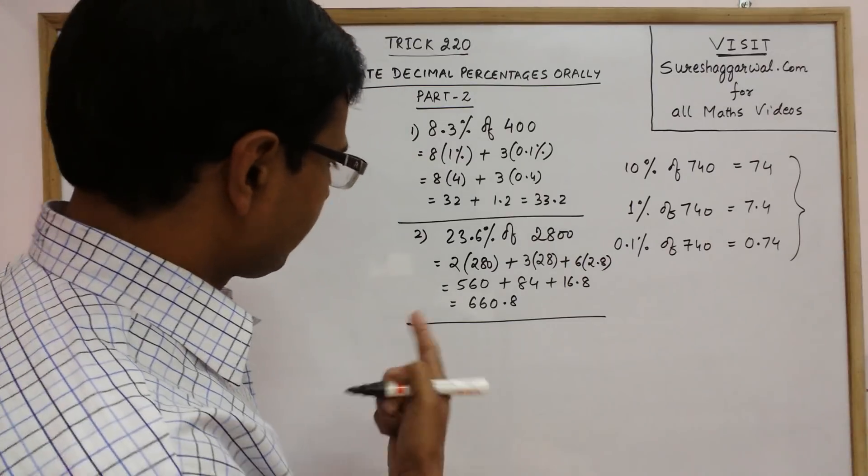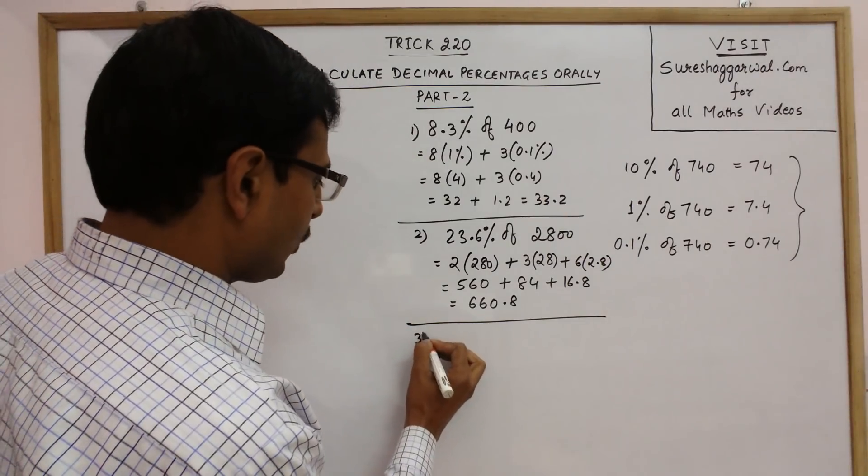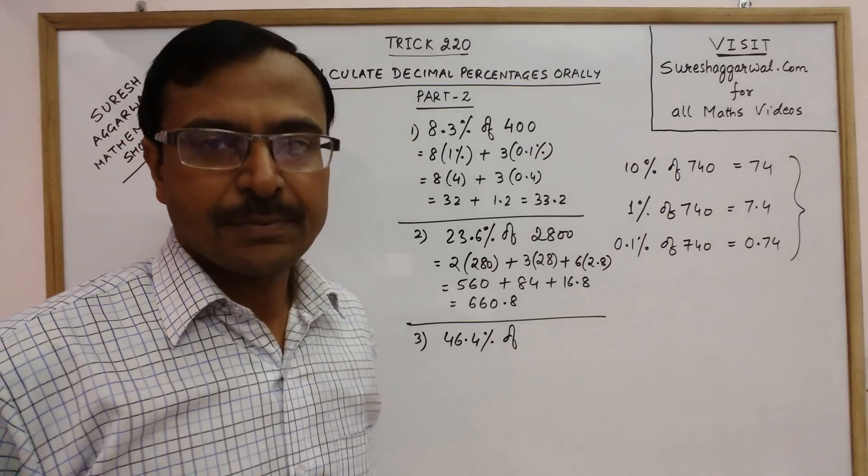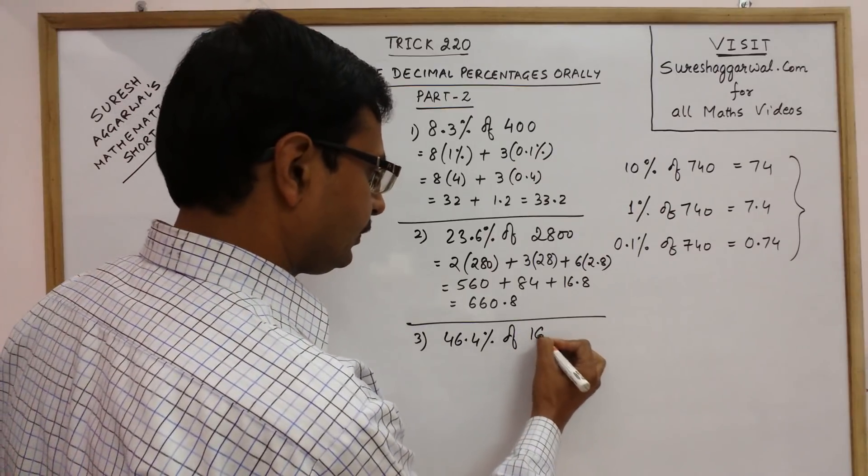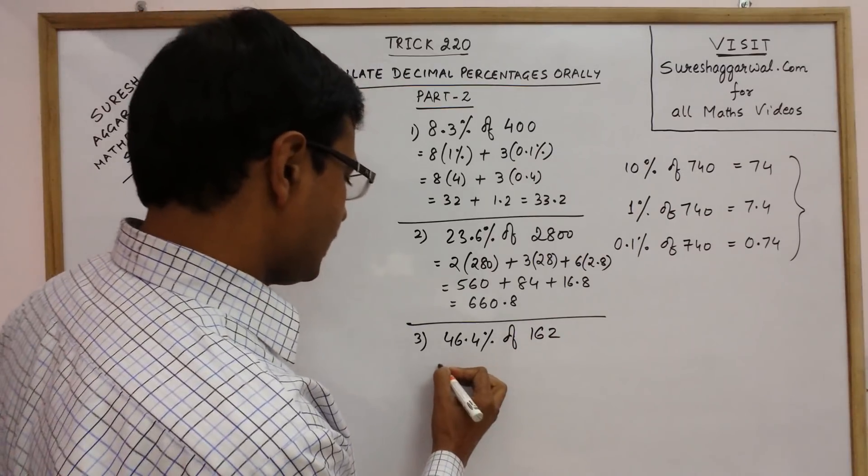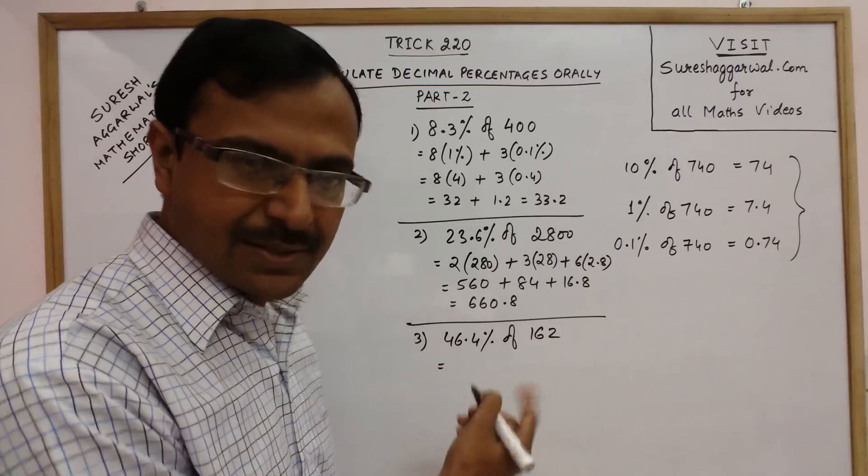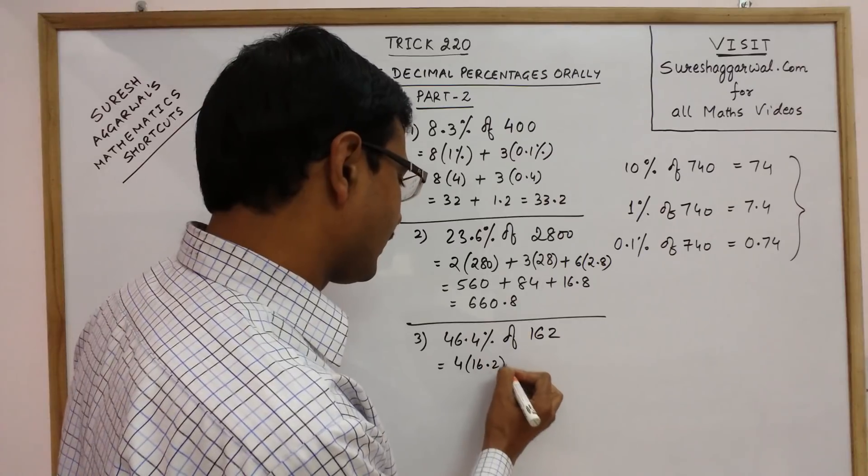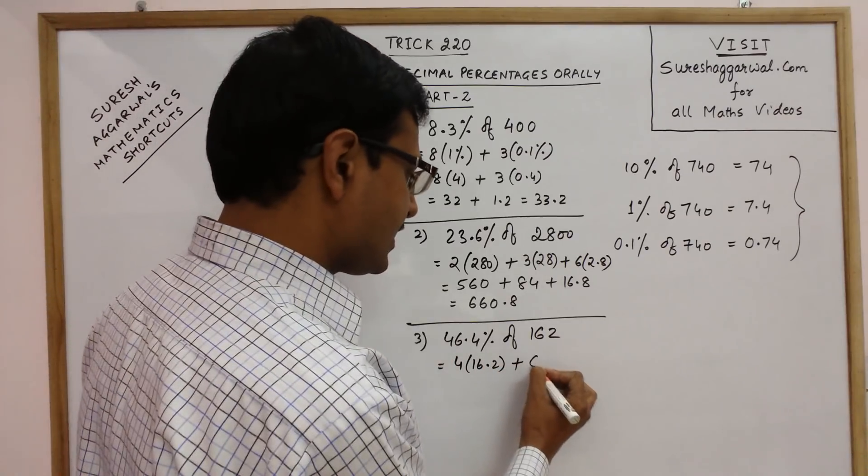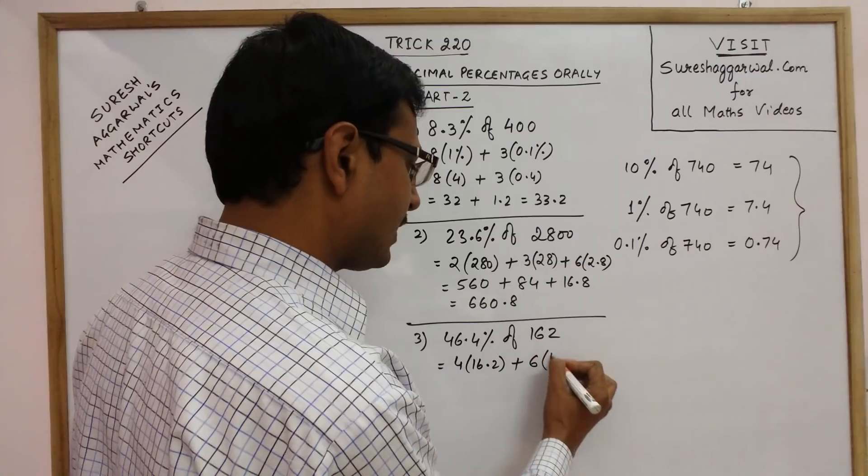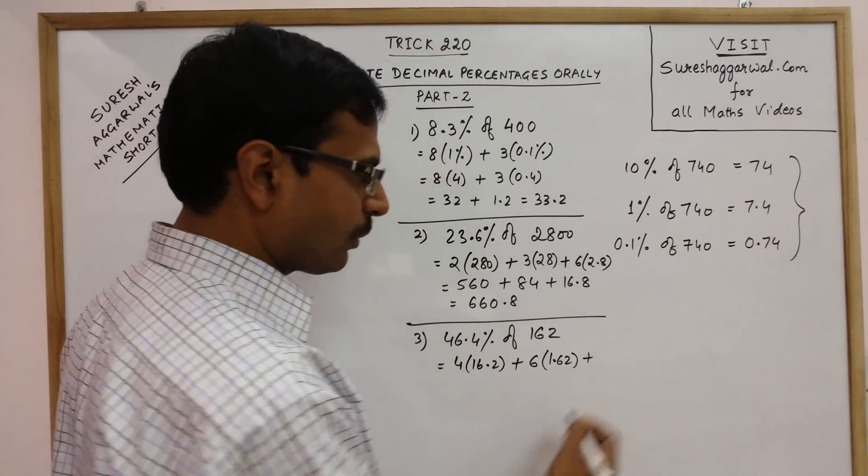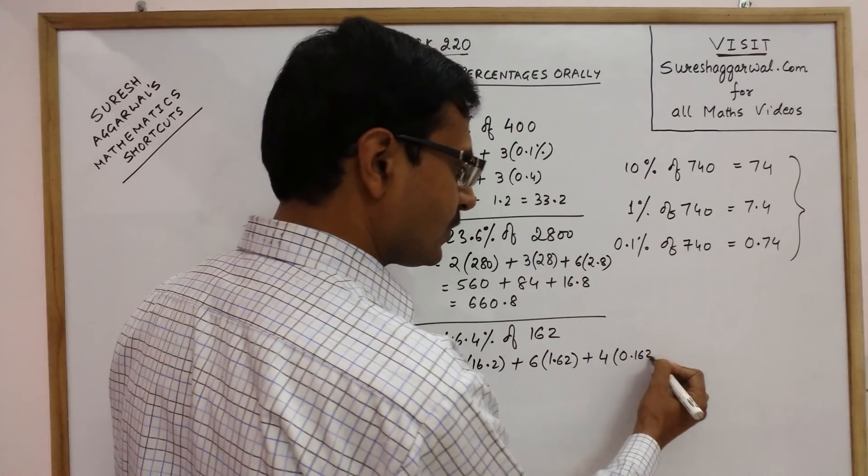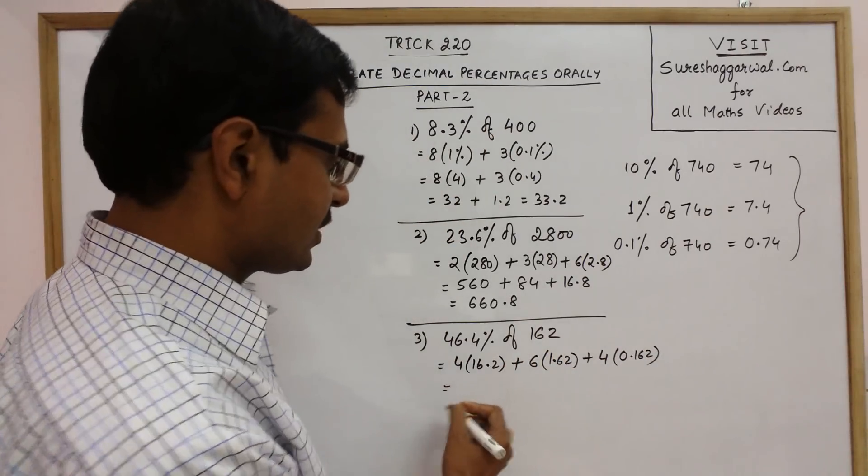Take some more example, this time a larger percentage. Say 46.4% of this time the number which I am taking is 162. Now see, 46 so 40 means 4 into 10%, 10% is 16.2. 6 means 6 into 1%, 1% is 1.62. And 0.4, 0.4 means 4 into 0.1%. So 3 digits from the right 0.162. Now just calculate this. It is a very easy calculation.